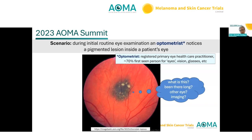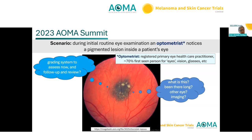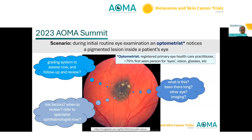A few thoughts come to mind: What is this? Has it been there very long? Is it in the other eye? Should I do some imaging, and can I do imaging? What grading system can I use to assess this now? Will I follow up using the same grading system? What risk factors might be of interest? When should I review this, and should I refer to a specialist ophthalmologist?